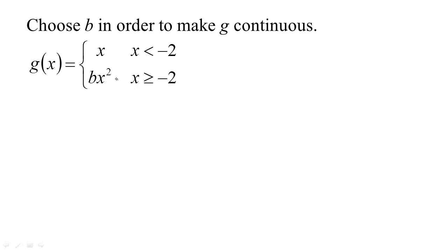We have a piecewise function — a function where we're piecing together two functions. We might want to make sure that they meet in a way that's continuous. In this case we have x, which is a continuous function, and for any constant b, bx squared would also be a continuous function. So we just want to make sure it's continuous at x equals negative 2.